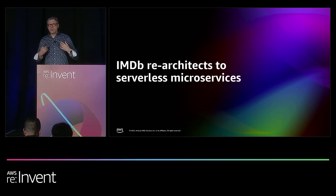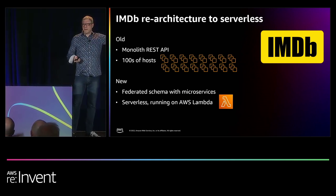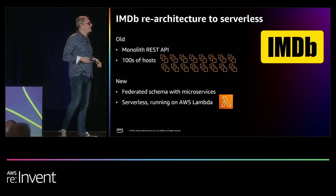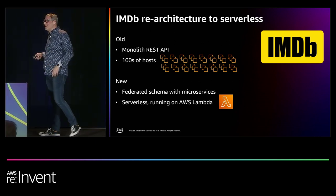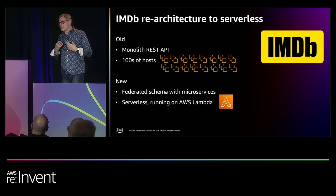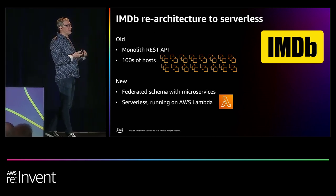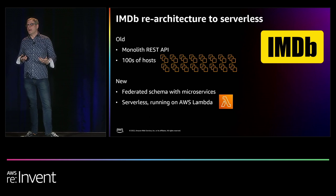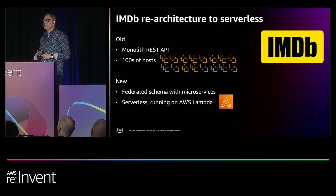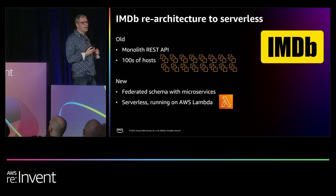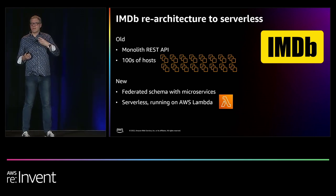Our first example: how IMDB re-architected to serverless microservices. IMDB, the Internet Movie Database, was acquired by Amazon in 1998. It is the number one location to learn about movies, TV shows, actors, producers, and all that good stuff. Prior to re-architecture, they were running a monolithic build with a REST API on hundreds of EC2 servers. When they re-architected, they moved to a federated schema with microservices — small, decoupled services focused on a specific business domain. They used Lambda, AWS's serverless compute, the ability to run code without servers.